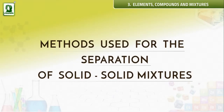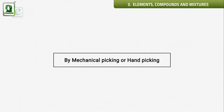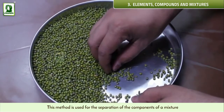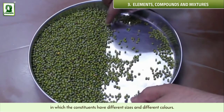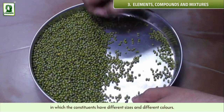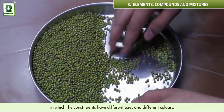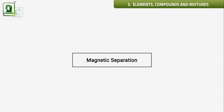Methods used for the separation of solid-solid mixtures include mechanical picking or hand picking. This method is used for the separation of the components of a mixture in which the constituents have different sizes and different colors.